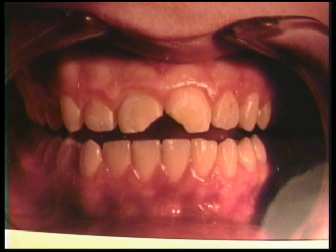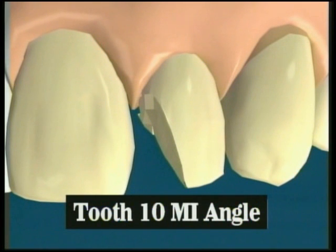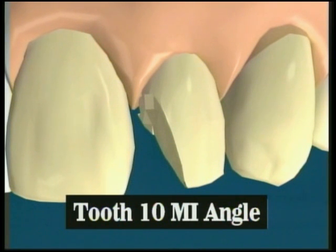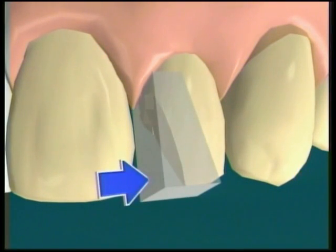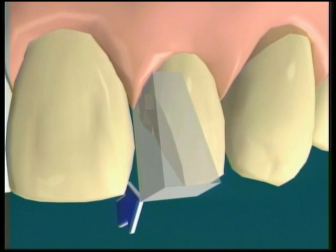Incisal angle restorations involve the entire angle of the tooth, which is actually four surfaces, not two. Many people confuse an incisal angle restoration as being a two-surface restoration because we use only two surfaces to designate and describe the angle. The four surfaces involved include the mesial or distal surface, in combination with the facial surface, the lingual surface, and the incisal edge.